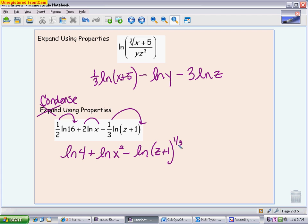Then I'm going to work with my two that are being added need to be multiplied together, so I'm going to have the natural log of 4x squared. And then my one is being subtracted along the denominator. So again, I can either write it as z plus 1 to the one-third power, or I can write it as the cube root of z plus 1.